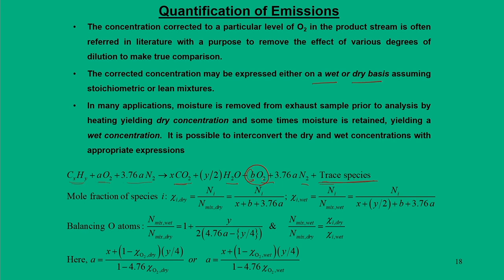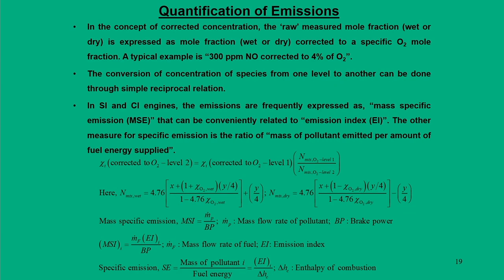On a dry basis, the concentration of species i (dry) equals nᵢ divided by n_mixture_dry, where H₂O is excluded from the total moles. On a wet basis, H₂O (coefficient y/2) is included in the total moles. Once balanced, the ratio of wet to dry mixture can be framed as a ratio of dry to wet combinations.